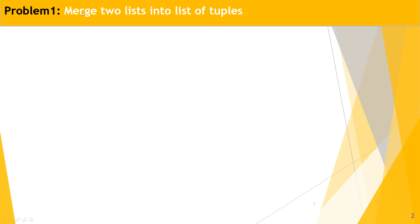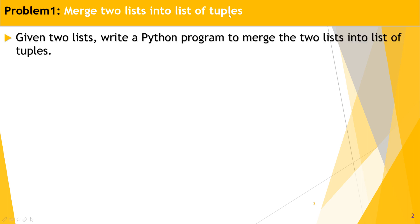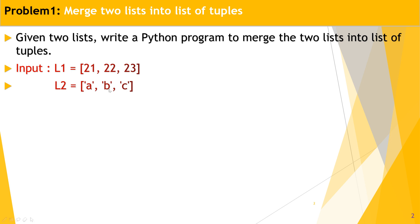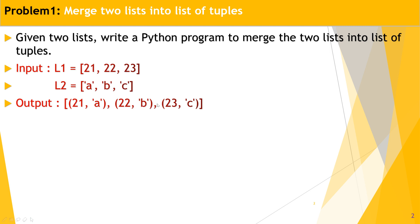The first problem statement is: merge two lists into a list of tuples. The given input is two lists: L1 containing some elements and L2 containing some elements. The output is a list of tuples — for example, (21, a), (22, b), and (23, c) — three different tuples separated by commas, collected into a list.